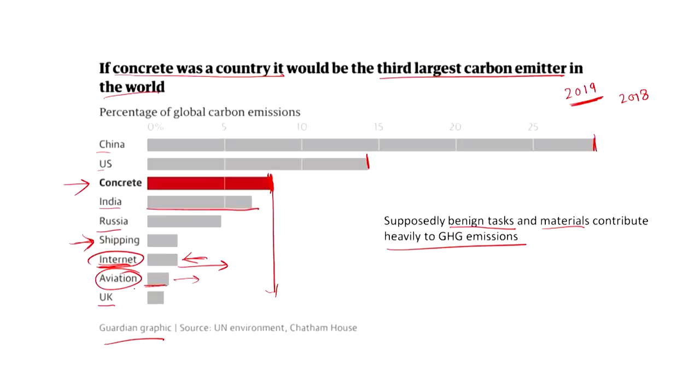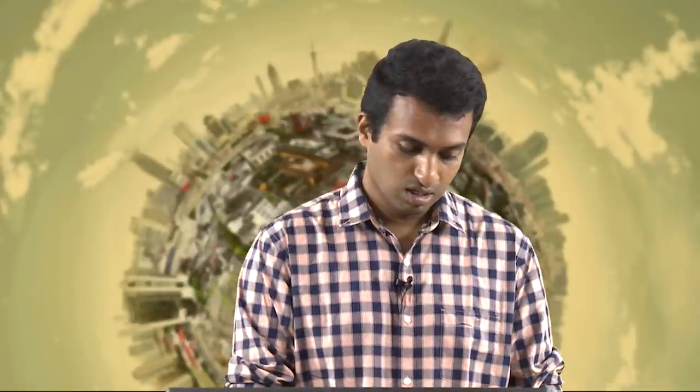The next time you think about googling something, keep this in mind. We have China, US, India, Russia, and far out UK — and then concrete as third largest, shipping, internet, and aviation. Aviation's greenhouse gas emissions are remarkably high — higher than the whole GHG emissions of the UK. Globe-trotters — footballers, fashion designers — we have a price to pay for that. Something to keep in mind when thinking about lifestyle changes.